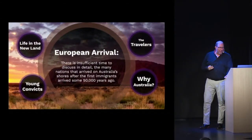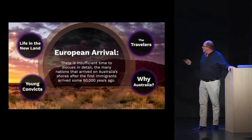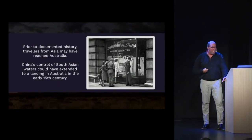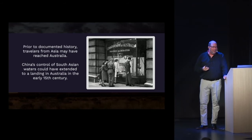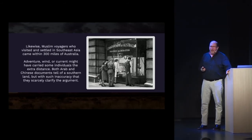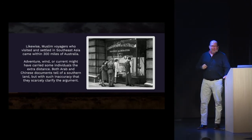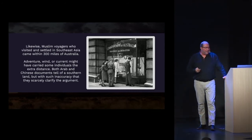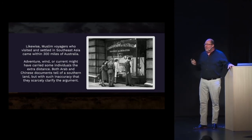Now we'll talk briefly about the European arrival. Prior to documented history, travelers from Asia may have reached Australia. China's control of South Asian waters would have extended possibly to a landing in Australia in the early 15th century. Muslim voyagers came within 300 miles of Australia but didn't see land. Both Chinese and Arab documents tell about a southern land, but aren't able to describe it with enough accuracy for us to confirm it was Australia.